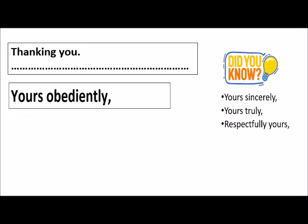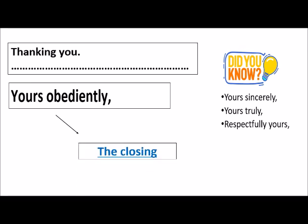After this, you will leave a line and then write 'Yours obediently.' This part of the application is called the closing. It is written towards the left-hand side of the page and is followed by a comma — 'Yours obediently comma.' The Y of 'Yours' will be capital and the O of 'obediently' will be small. Other commonly used closings are 'Yours sincerely,' 'Yours truly,' and 'Respectfully yours.'